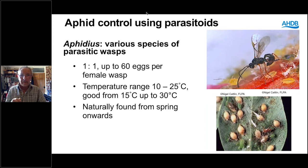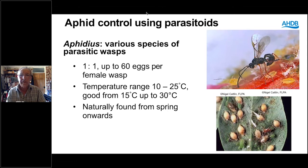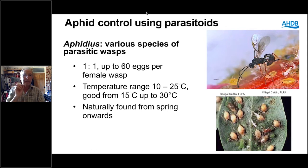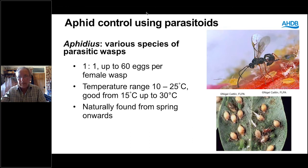For larger aphids — Aulacorthum, Macrosiphum, the bigger two to three millimetre aphids — we want Aphidius ervi. These are available individually or as a mix of the two parasitoids together. We also have Aphelinus abdominalis, Aphidius matricariae, Praon volucre, and Aphidrus species including Aphidrus thoracicus. There's a whole range of different aphid parasitoids, but it's important to know which aphids you're trying to control.